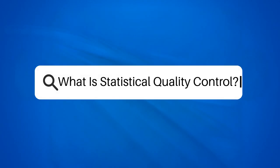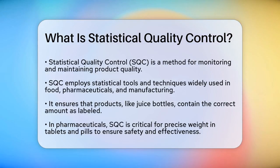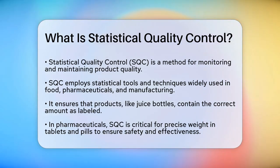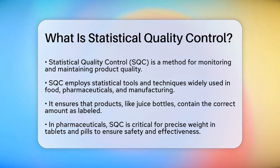What is Statistical Quality Control? If you're curious about how companies ensure the quality of their products, you're about to learn a crucial aspect of manufacturing and production. Statistical Quality Control, or SQC, is a method that uses statistical tools and techniques to monitor and maintain the quality of products. This approach is widely used in industries like food, pharmaceuticals, and various manufacturing sectors.